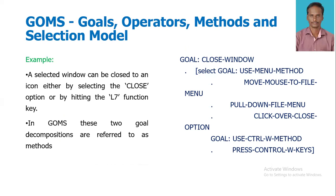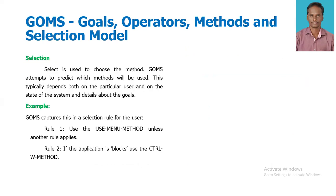For example, a selected window can be closed either by selecting the Close option or by hitting the Ctrl+W function key. In GOMS, these two goal decompositions are referred to as methods. The goal is 'Closing window': the Menu method involves moving the mouse to the File menu, pulling it down, and clicking Close; the Ctrl+W method involves pressing the Ctrl keys. Selection is used to choose the method — for example, use the Menu method unless another rule applies; if the application is blocked, use the Ctrl+W method.